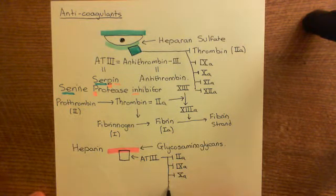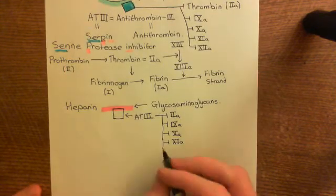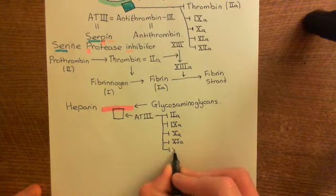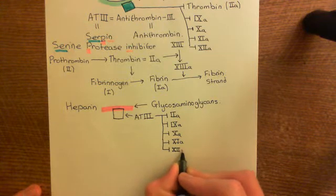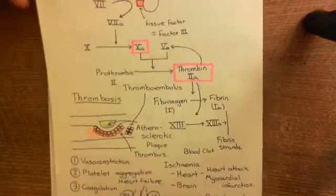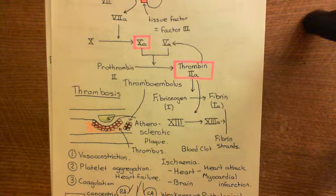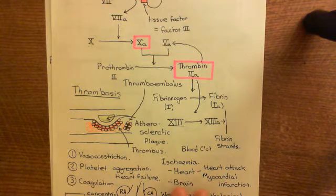Through these actions, heparin will stop the intrinsic and extrinsic coagulation cascades if they should be activated. If you don't have those cascades going on within the bloodstream, you can't produce fibrin strands, which means you can't form a thrombus — because thrombosis requires coagulation. If you just have platelets aggregating, that doesn't form a solid mass; it forms a gooey mass that can easily disintegrate. To hold it all together you need fibrin strands, and without them, no thrombus forms — protecting against heart attack and stroke.